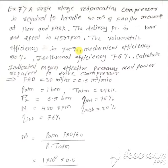FAD is given as 30 meter cube per hour. We have to write FAD in meter cube per minute, which is 0.5 meter cube per minute. With FAD, pressure and temperature are always atmospheric, therefore atmospheric pressure is 1 bar and atmospheric temperature is 298 Kelvin.